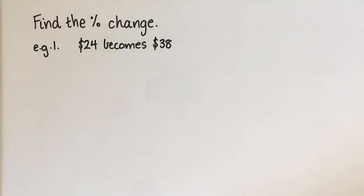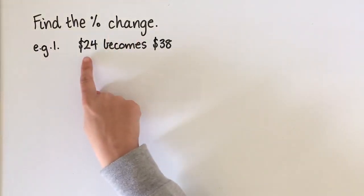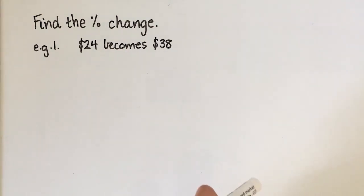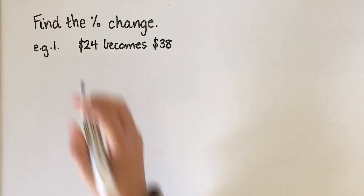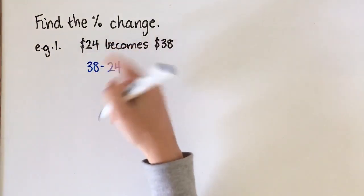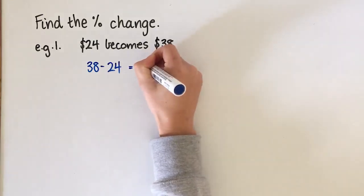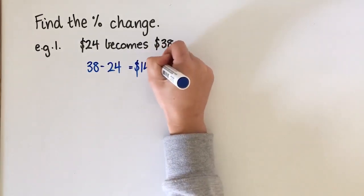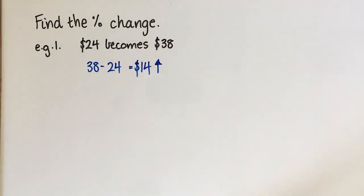For this first one, we're asked to find the percentage change from $24 which has become $38. The first thing we need to do is work out how much it's changed. So 38 take away 24, that'll give us the change, and the change is $14 and it's become an increase. So it's gone up $14.